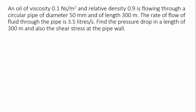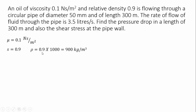Let us see what data is given in this question. The viscosity is given as 0.1 N·s/m² and the relative density is given. Relative density is nothing but specific gravity. So if you multiply the specific gravity by the density of water, you get the density of that particular fluid. Here the relative density is 0.9, so density equals 0.9 × 1000 = 900 kg/m³ for this oil.